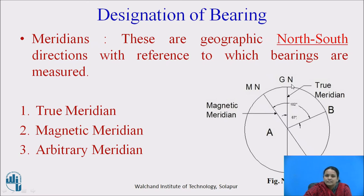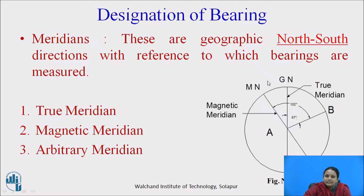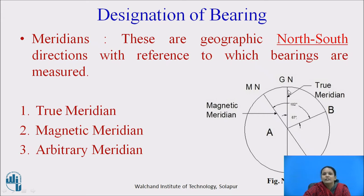In this figure, GN indicates the geographical north direction. The second type is the magnetic meridian, which is the point on the ground level indicating the north-south pole. Here, MN indicates the magnetic meridian, and the angle measured with respect to this meridian is called the magnetic bearing. The survey line B makes an angle of 67 degrees with the geographical north-south pole (true meridian) and is making an angle of 102 degrees with the magnetic meridian.